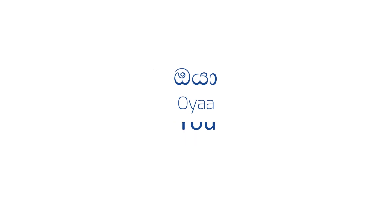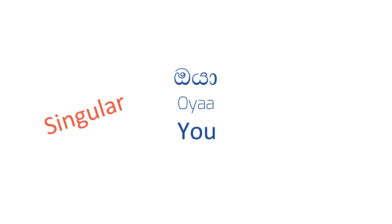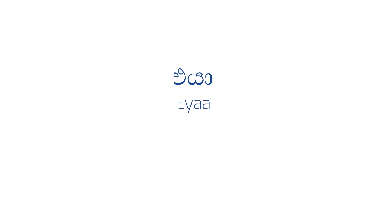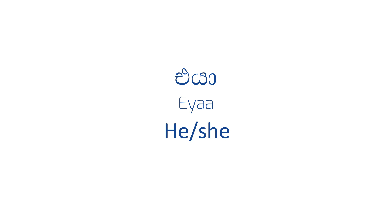Next word: oya. Oya means you, but this is the singular word. Next is ea, which can mean he or she.